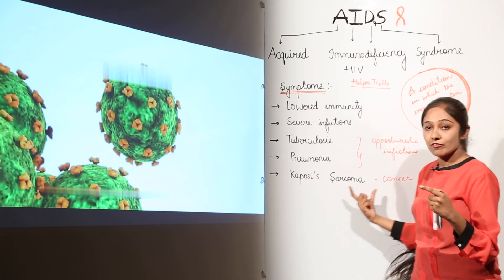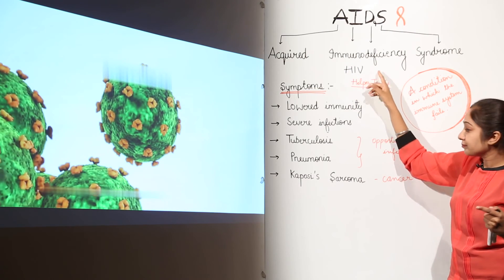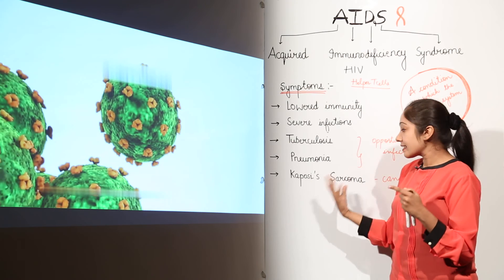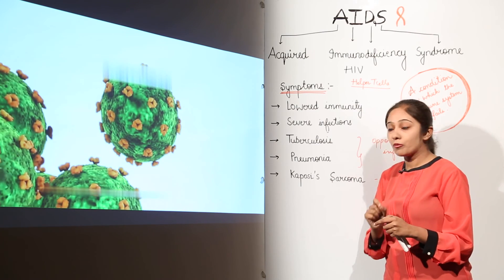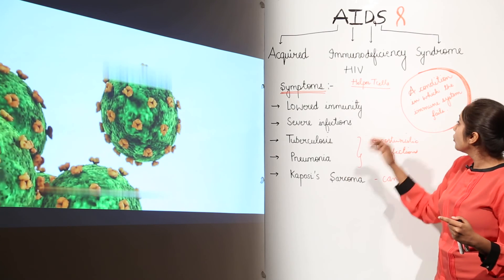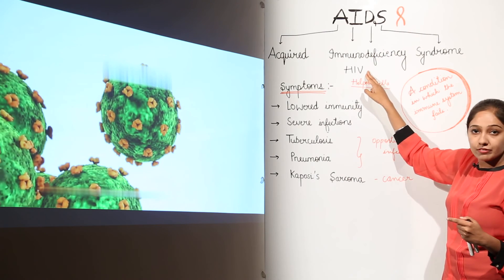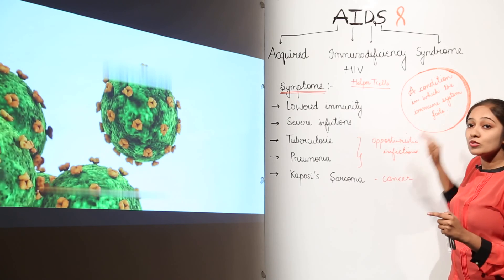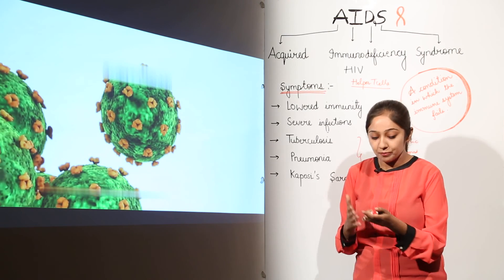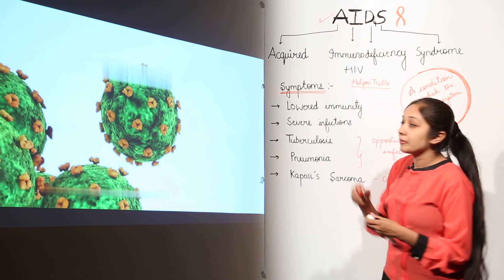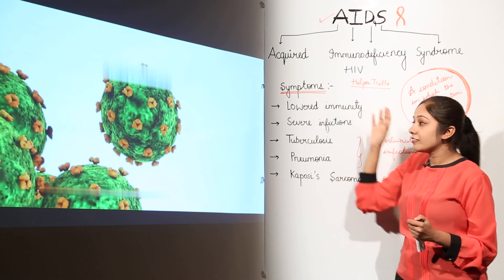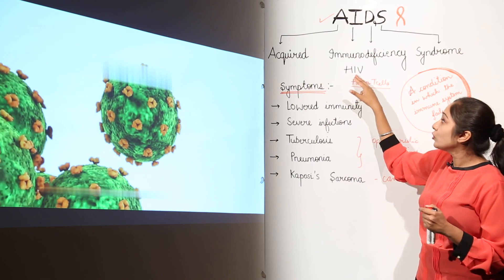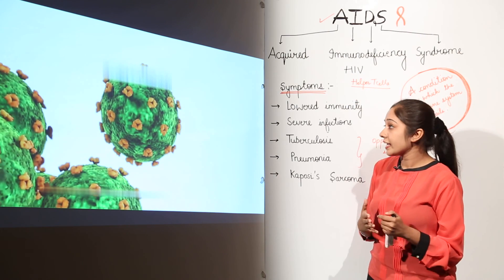Kaposi's sarcoma is a type of cancer caused by the HIV virus — it is cancer in your blood vessel walls, and you can see pinkish or red spots on your body as a result. Remember that AIDS is caused by the HIV virus, which attacks the helper T cells of your body, ultimately making your immune system so weak it cannot fight infections. Now let us see in detail what actually happens when you are infected by this HIV virus, which is Human Immunodeficiency Virus.